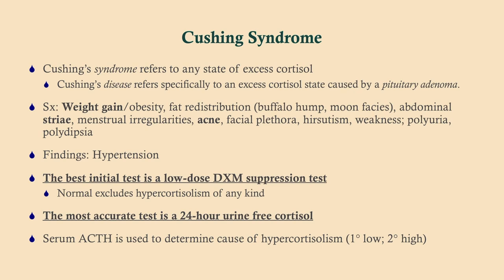The symptoms of Cushing syndrome are classic: weight gain and fat redistribution — that buffalo hump and moon facies — so fat accumulates in very particular places. Abdominal striae, those violaceous lines, are due to thinning of the skin layers. Menstrual irregularities occur because cortisol interferes with the release of gonadotropins. Other features include acne, facial plethora, hirsutism — hair growth where it shouldn't be, such as women developing a beard — which should prompt evaluation for PCOS and Cushing's.